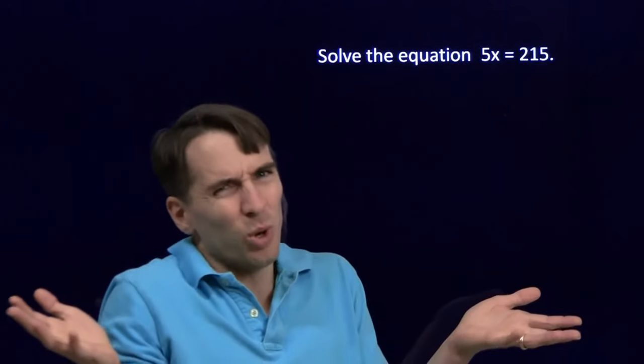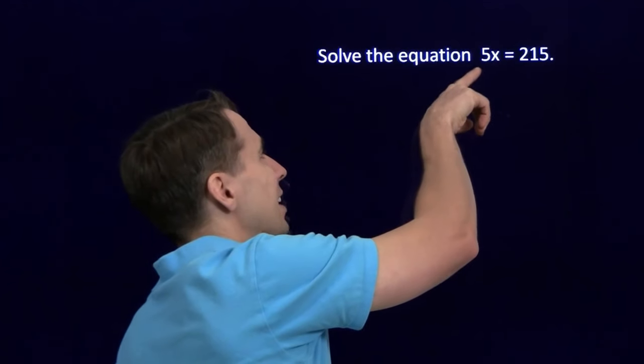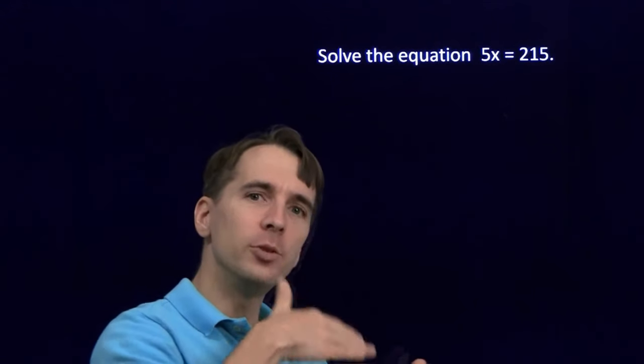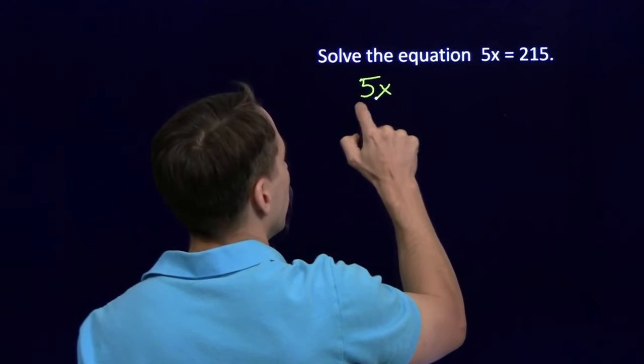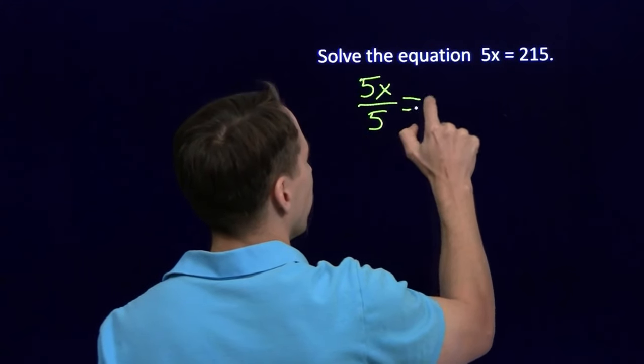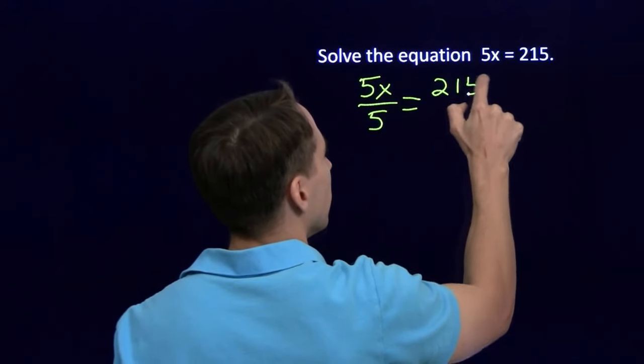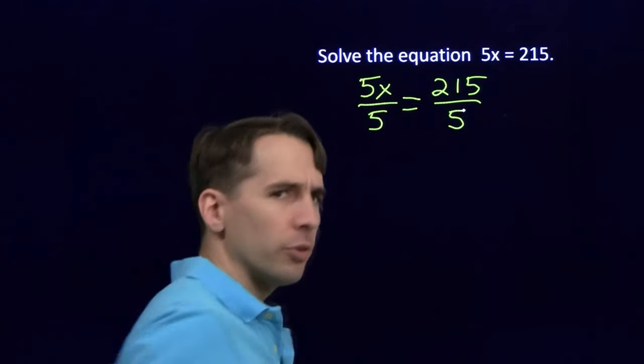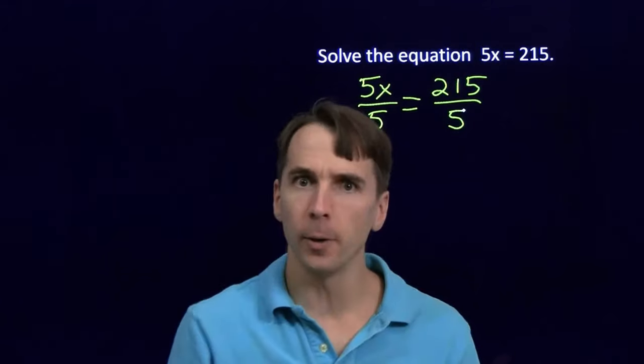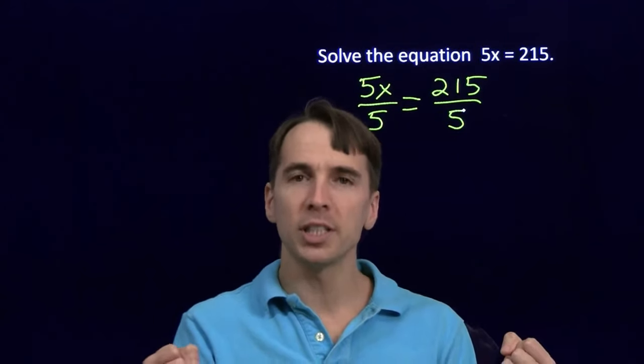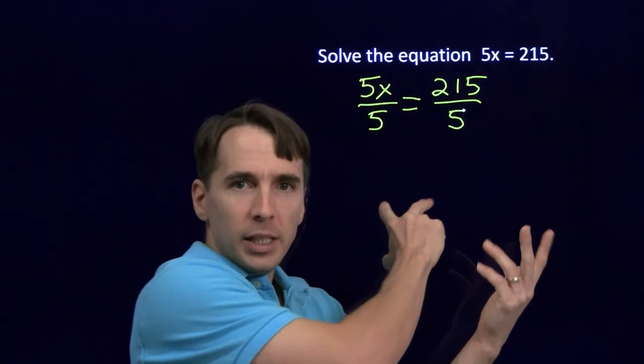What are we going to do with that? The x is multiplied by 5. We undo multiplication with division. We divide both sides by 5. If you start with two equal numbers, and you divide by the same thing that's not 0, no dividing by 0. If you divide by the same thing on both sides, then the quotients have to be equal.